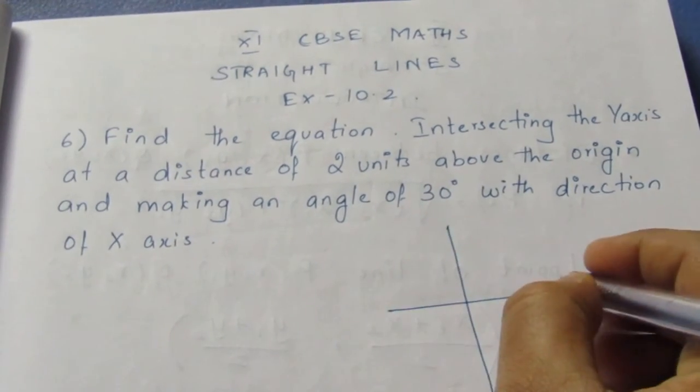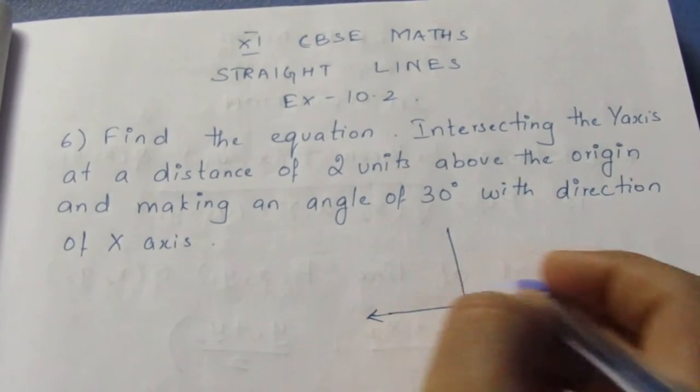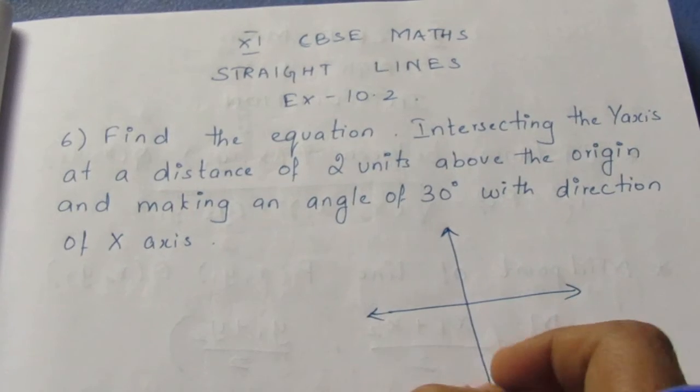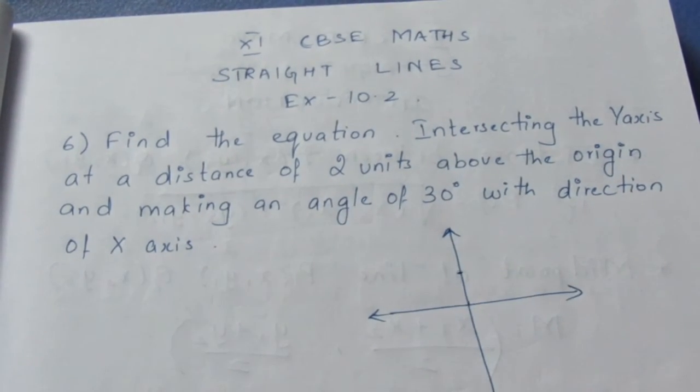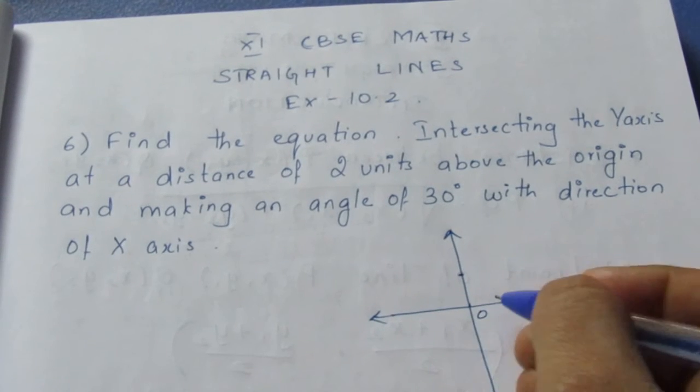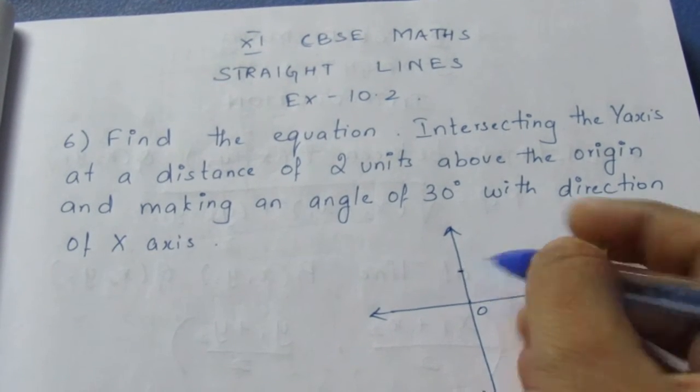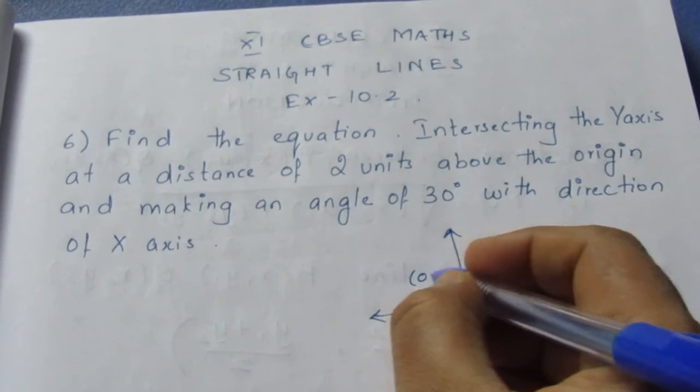Now let me draw a Cartesian plane. We are intersecting the y-axis at a distance of 2 units above the origin. From the origin, it is 2 units above, so the point will be (0, 2).